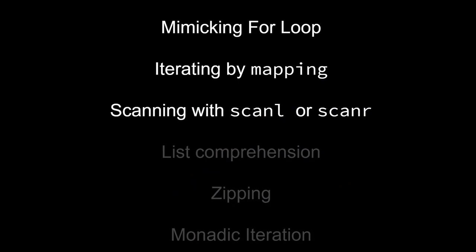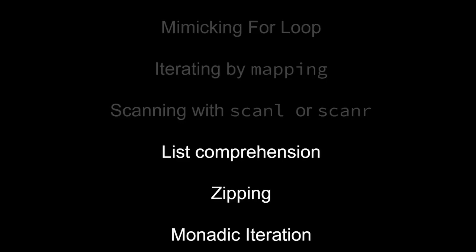Hello friends, in the last video we covered how to loop in Haskell by mimicking a for loop, by using the map function and by using the scanning functions. In this video we are going to look at the remaining three ways I had previously mentioned. So let's get into it.